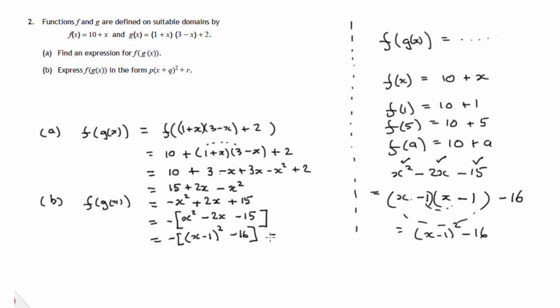And of course there's this negative outside, so let's just rewrite it by multiplying out the big square brackets. Negative 1 times x minus 1 all squared. Negative 1 times negative 16 is plus 16. So if you compare that with the way they wanted it written, p lots of x plus q squared plus r.